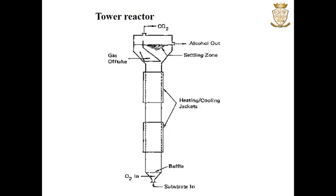The next type of bioreactor is the tower reactor. A tower reactor may be considered as an airlift reactor with larger dimensions. Here also there is a riser zone and a downcomer zone. Since these are having larger dimensions and higher heights, there is a high hydrostatic pressure at the bottom of the fermenter, which will increase the solubility of oxygen being pumped at the bottom. At the top of the riser, there is a reduced pressure which increases the release of gases, especially carbon dioxide from the medium. The media flows up and down through the riser and downcomer, giving efficient mixing of the media contents.